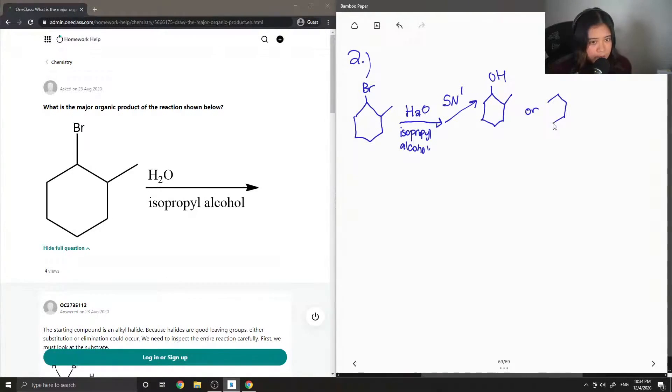And through hydride shifts, another product that could be formed is if the alcohol was with the tertiary carbon instead, since this is more stable. So I believe this will be our major product.